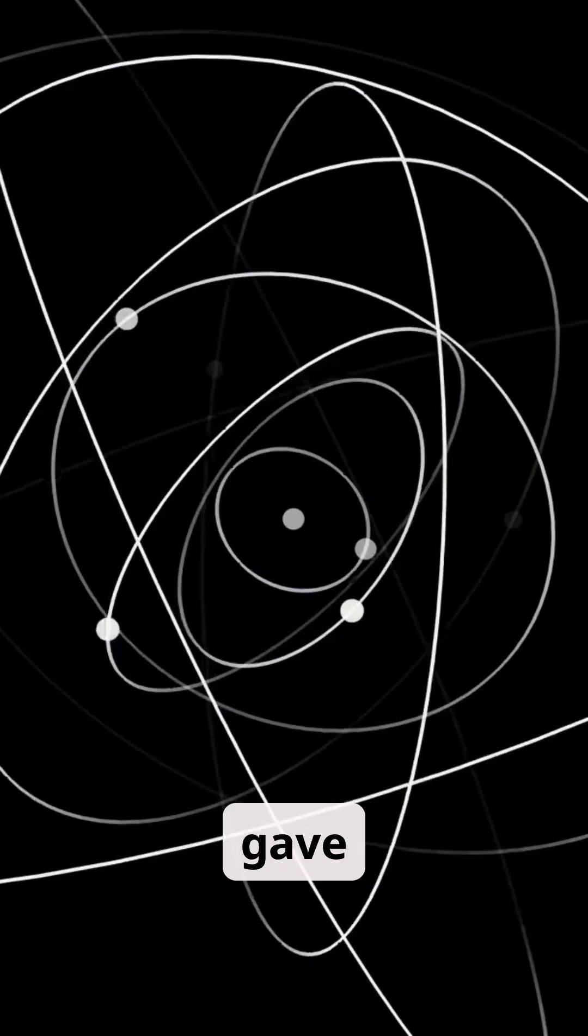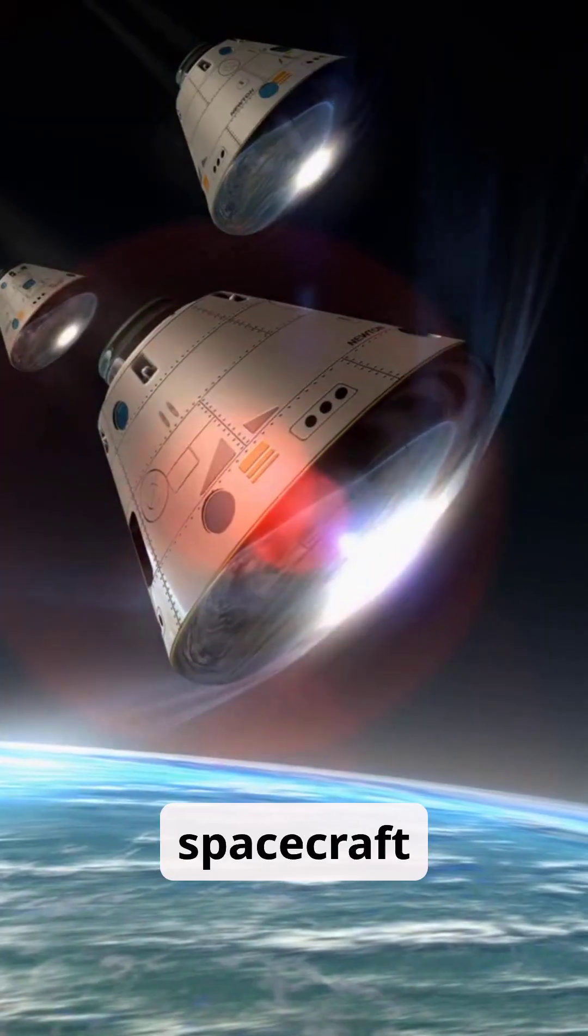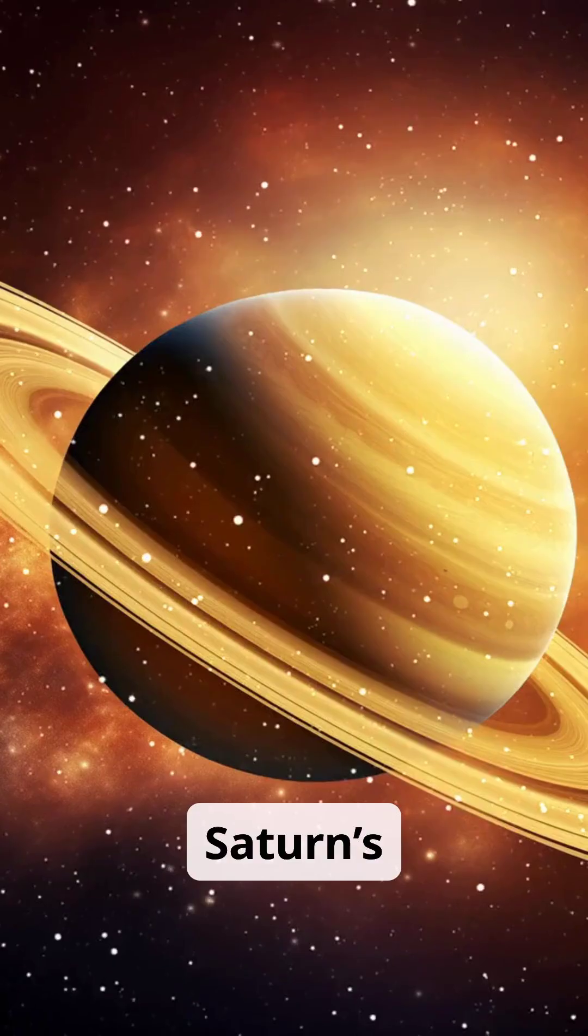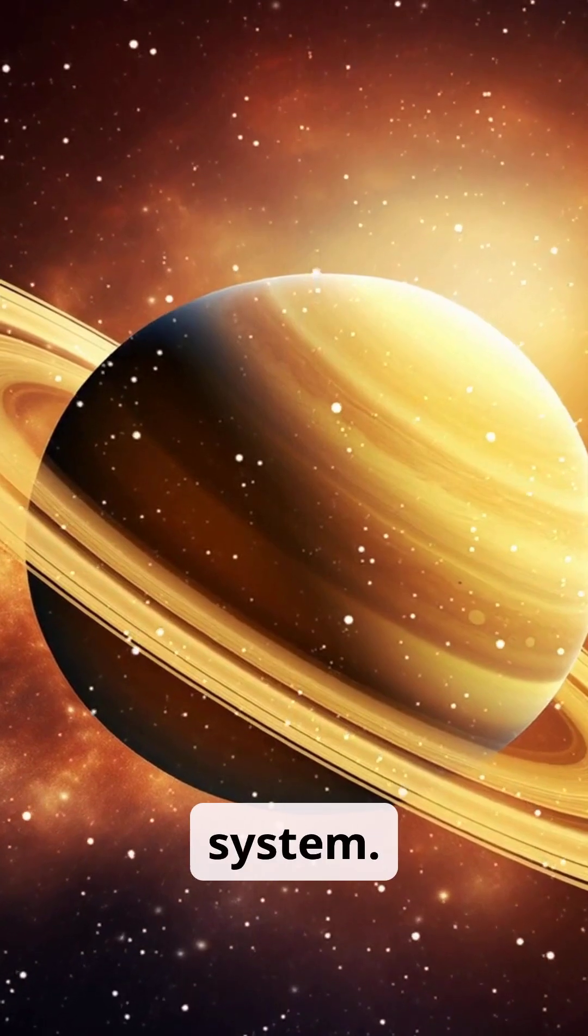Jupiter's gravity gave Voyager 1 a huge speed boost in 1979, making it travel faster than any spacecraft before. Saturn's gravity in 1980 changed its path, sending it toward the edge of the solar system.